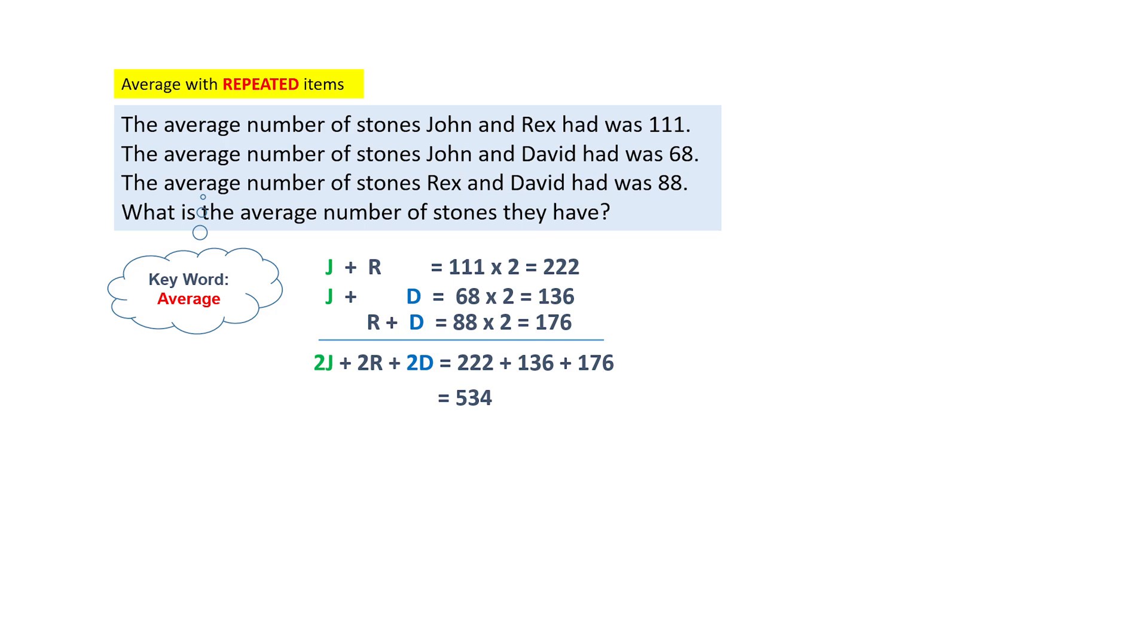So in order to find an individual number, which is one John plus one Rex plus one David, equals 534 divided by 2. And this will give you the answer 267.